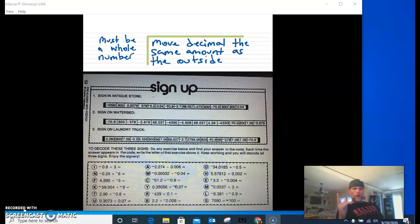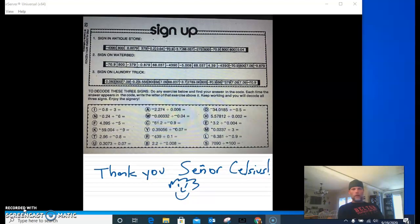So on the top, I always like to make some notes so I don't forget, so I don't have to look back in my journal. On the top, I've got that outside number, also known as the divisor. It has to be a whole number. And the inside number, also known as the dividend. Whatever we did to the outside, we have to do to the inside. We've got to treat everybody fair. And then I wanted to tell Senior Celsius thank you, just in case he decides to get on YouTube and watch this.